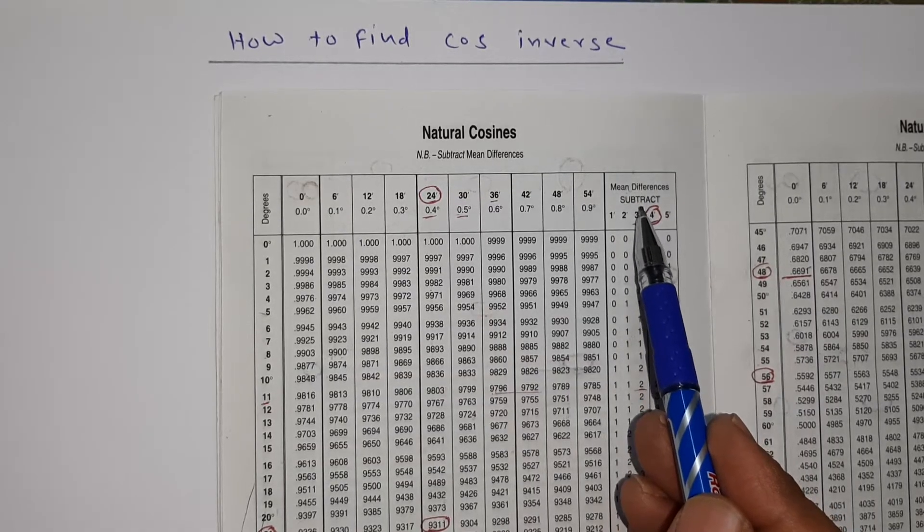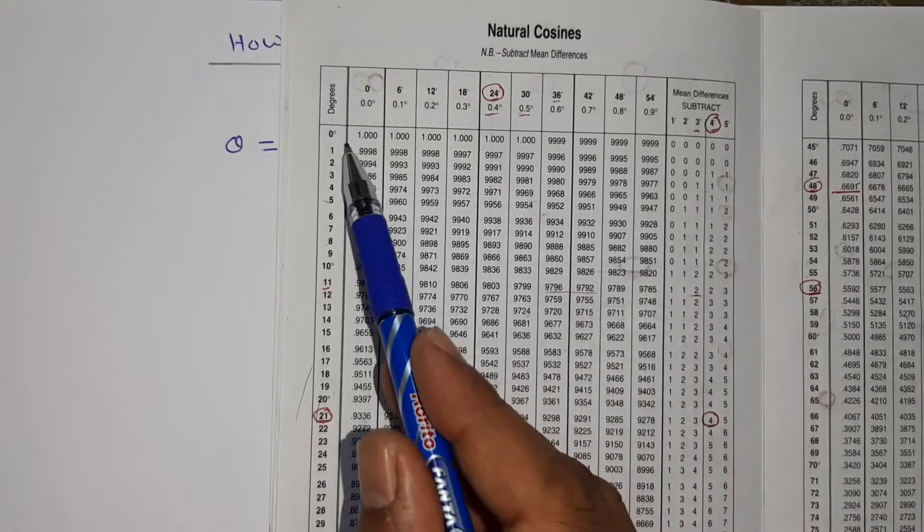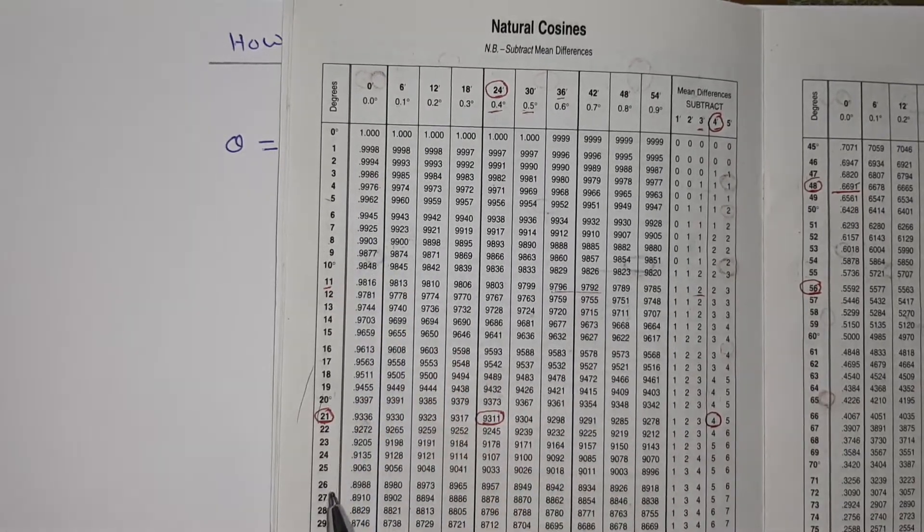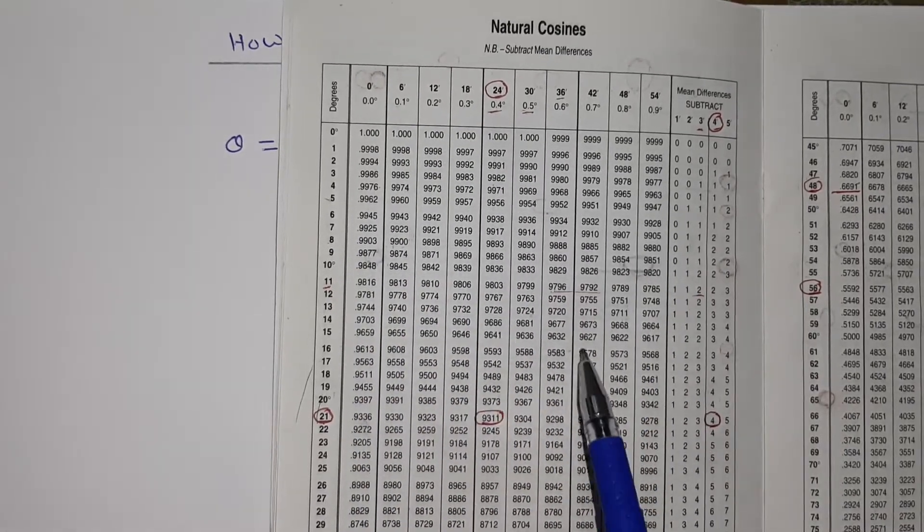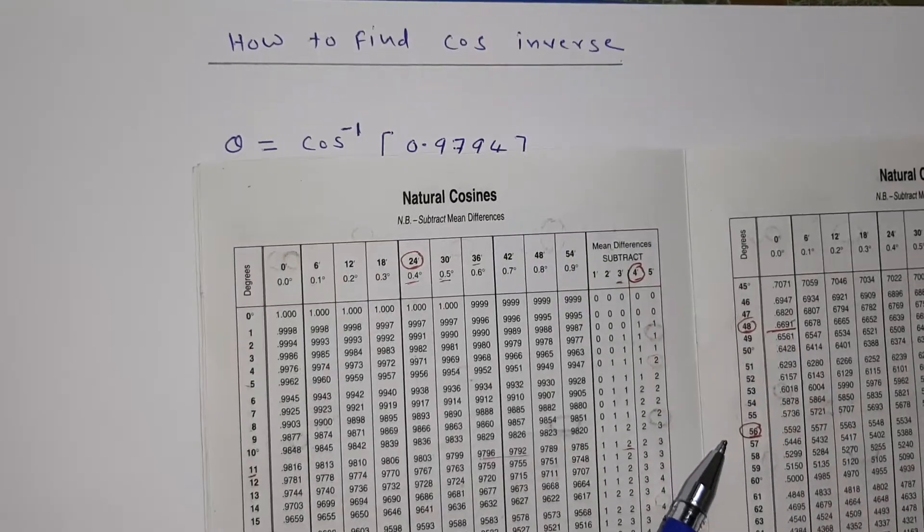Remember students, mean difference has to be subtracted because as theta value increases, the value of cosine decreases.